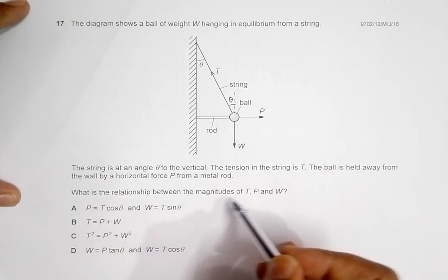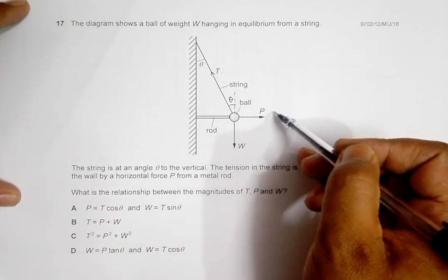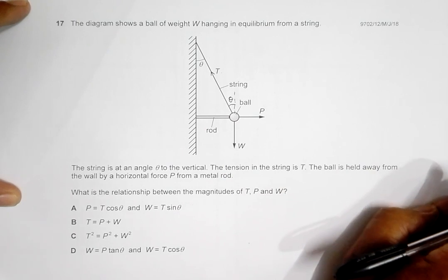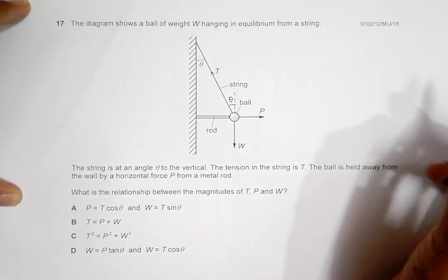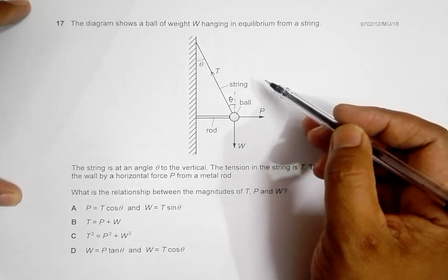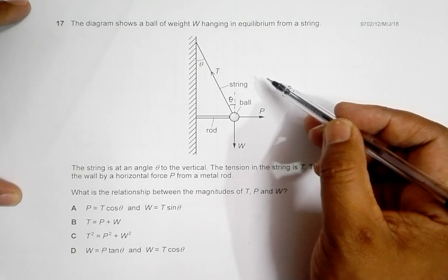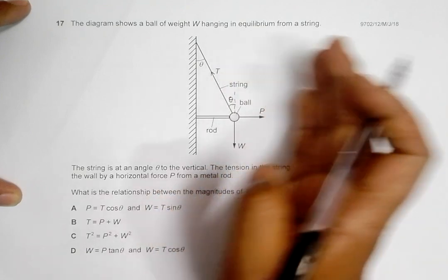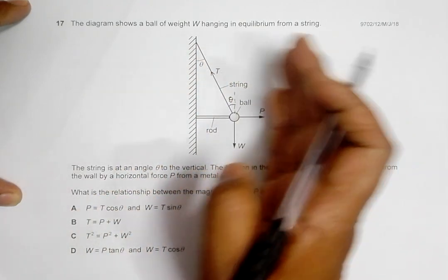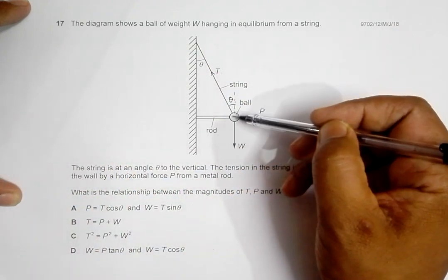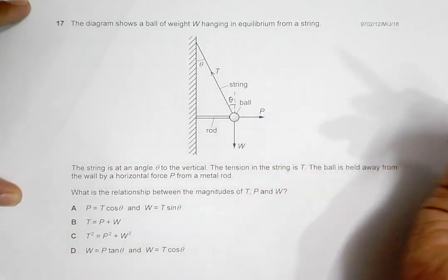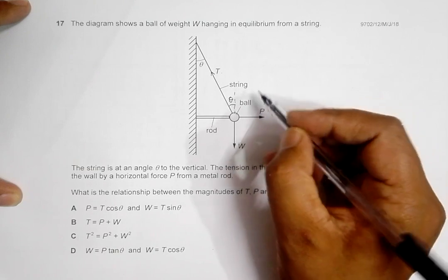Now we have to find the relationship between the magnitudes of T, P, and W. Let us first remember that when there is equilibrium, the forces in all dimensions are equal. For example, the horizontal forces in the object's side should be equal, and the vertical forces should be equal.